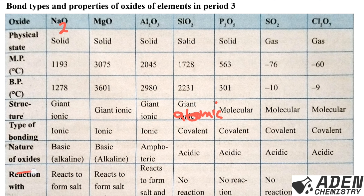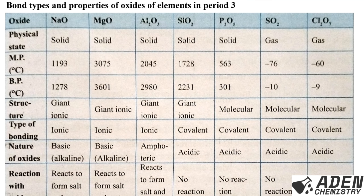Regarding reaction with acids: bases like sodium oxide, magnesium oxide, and aluminium oxide when reacted with acids form salt and water, although aluminium oxide is amphoteric so it reacts with both acids and bases. Silicon dioxide, phosphorus 5 oxide, sulfur oxide, and the oxide of chlorine will not react with or dissolve in acid. That is the end of our class today - thank you for watching.